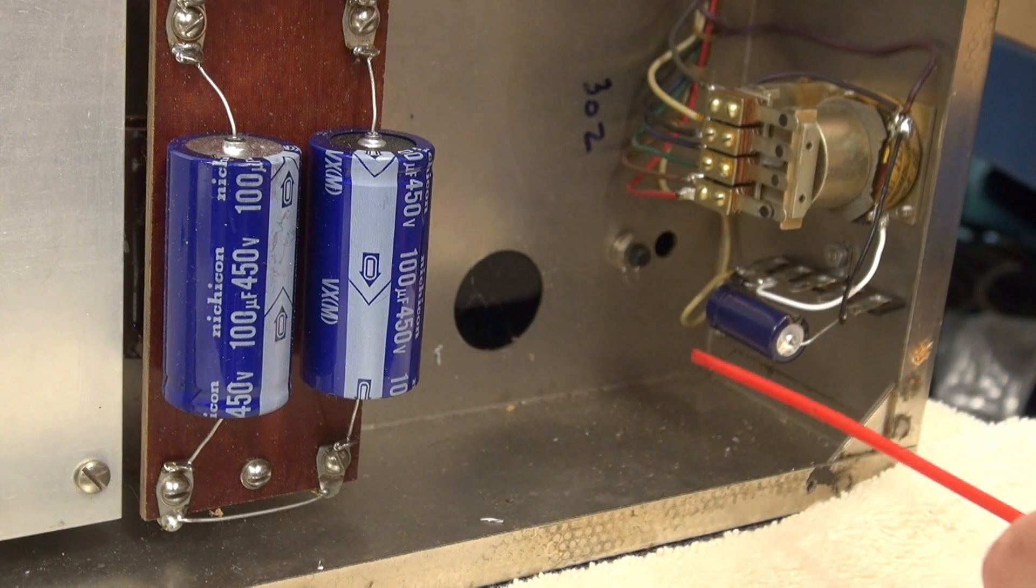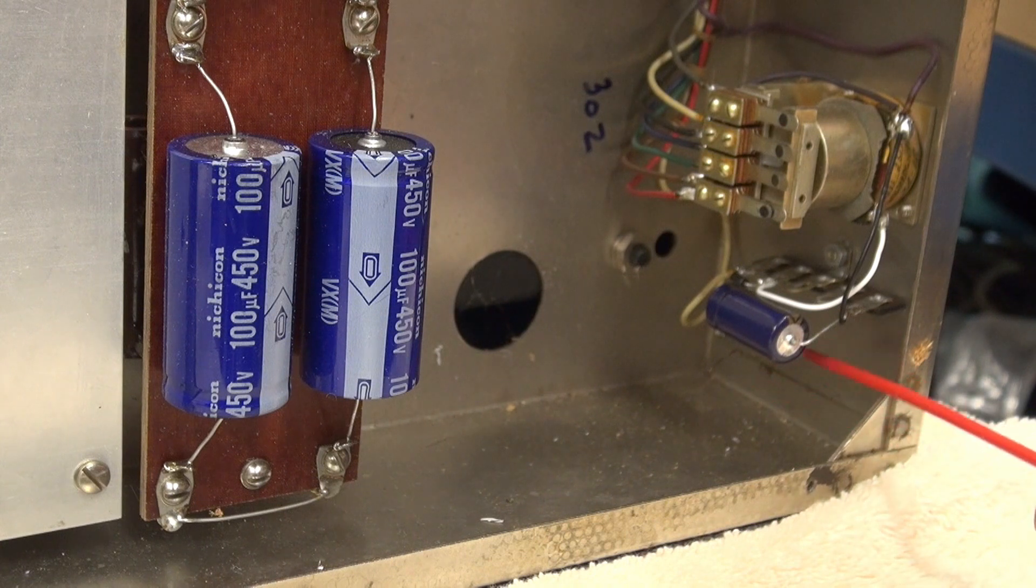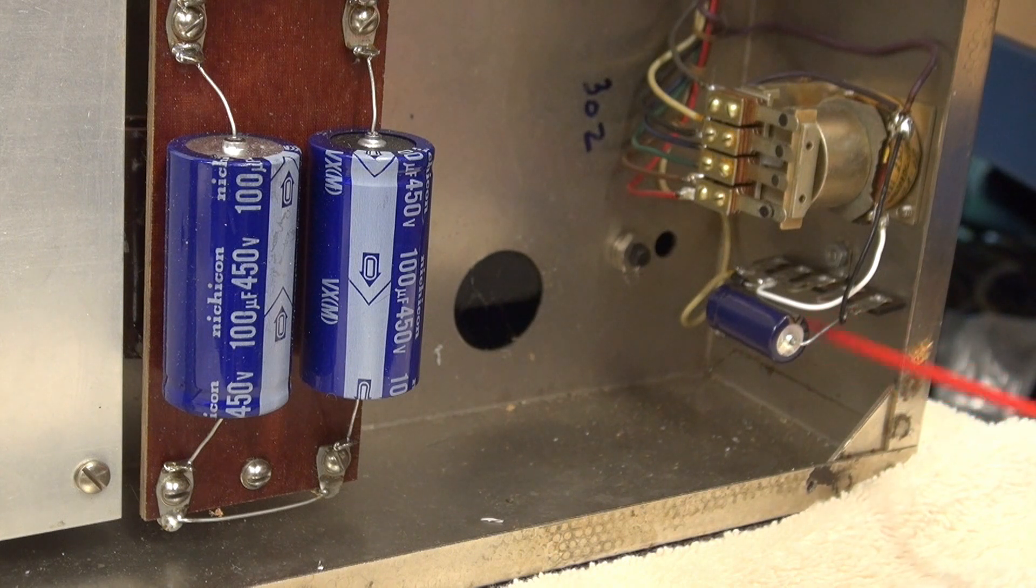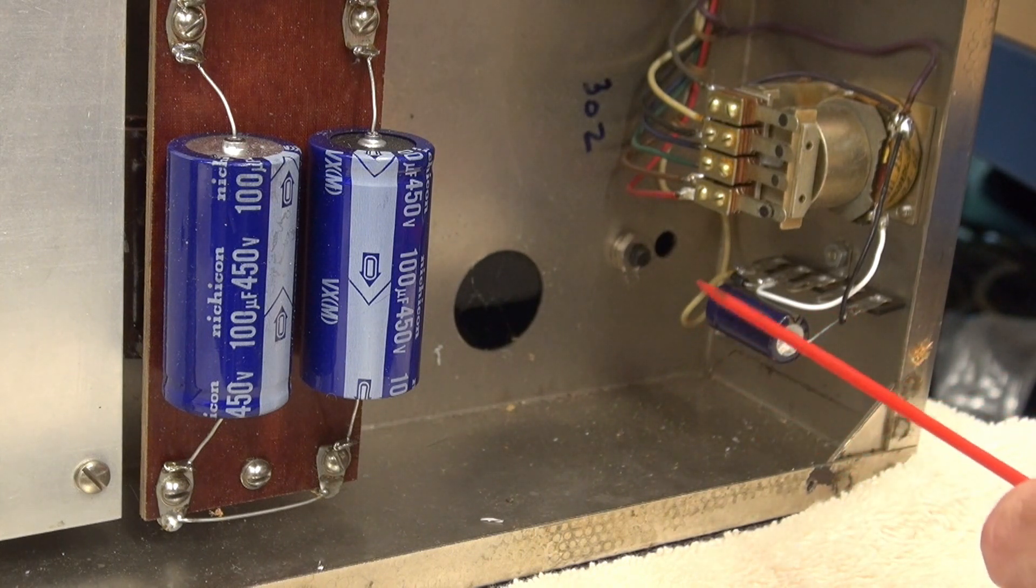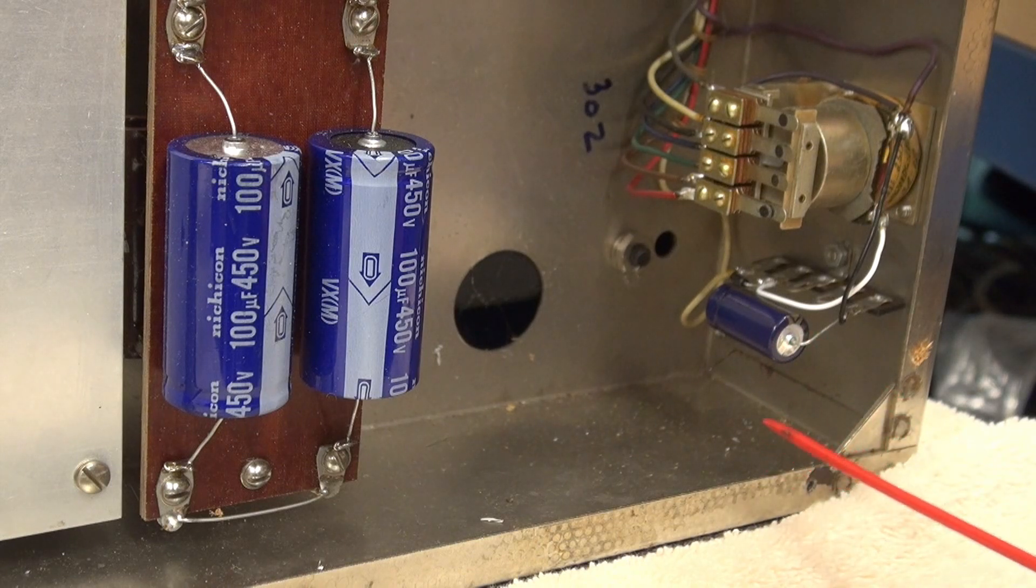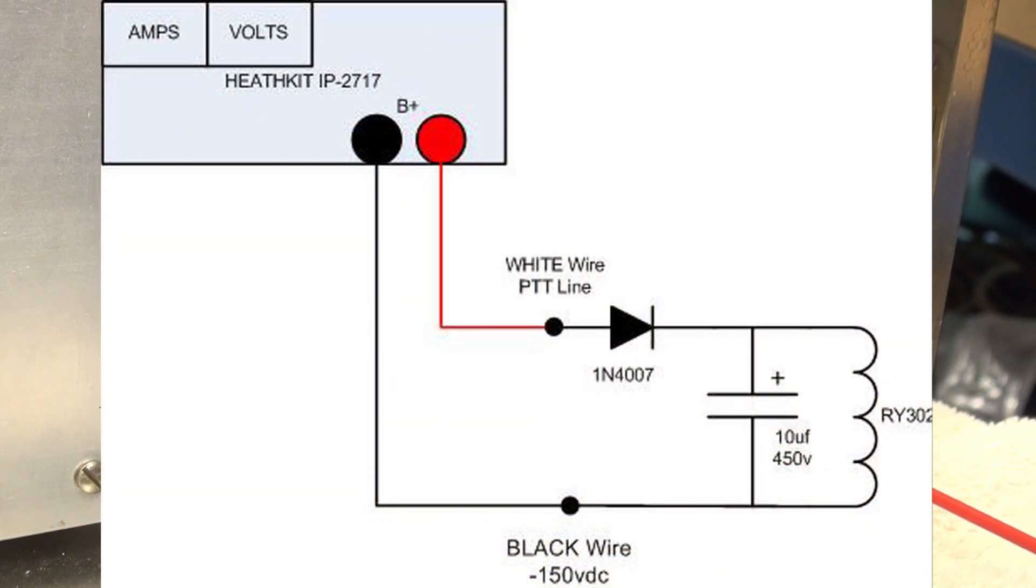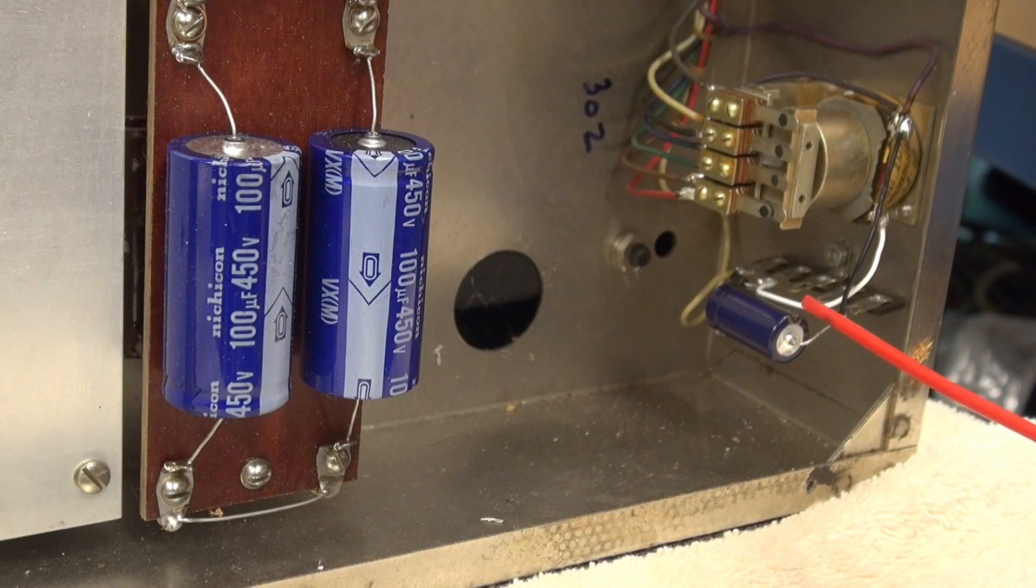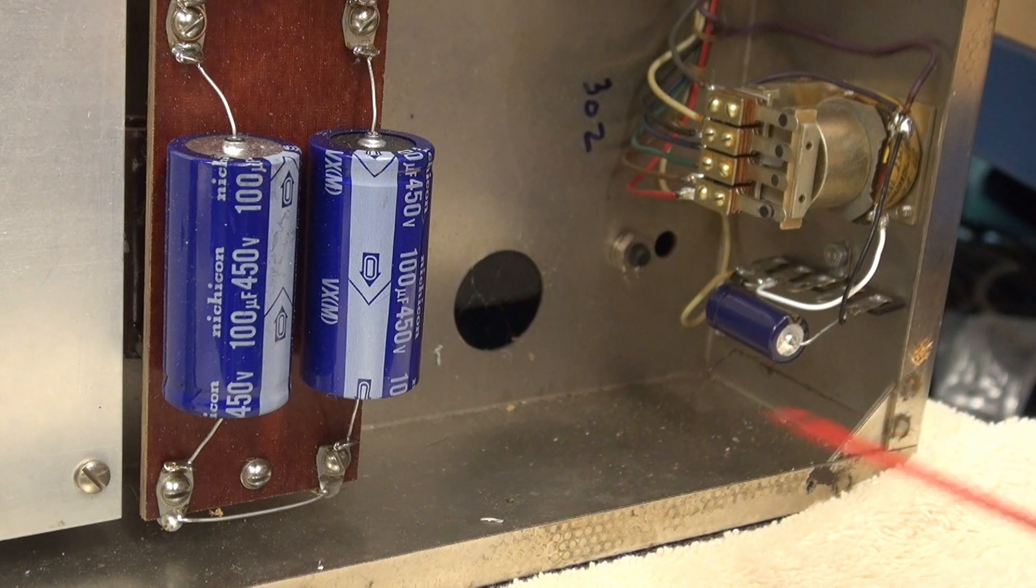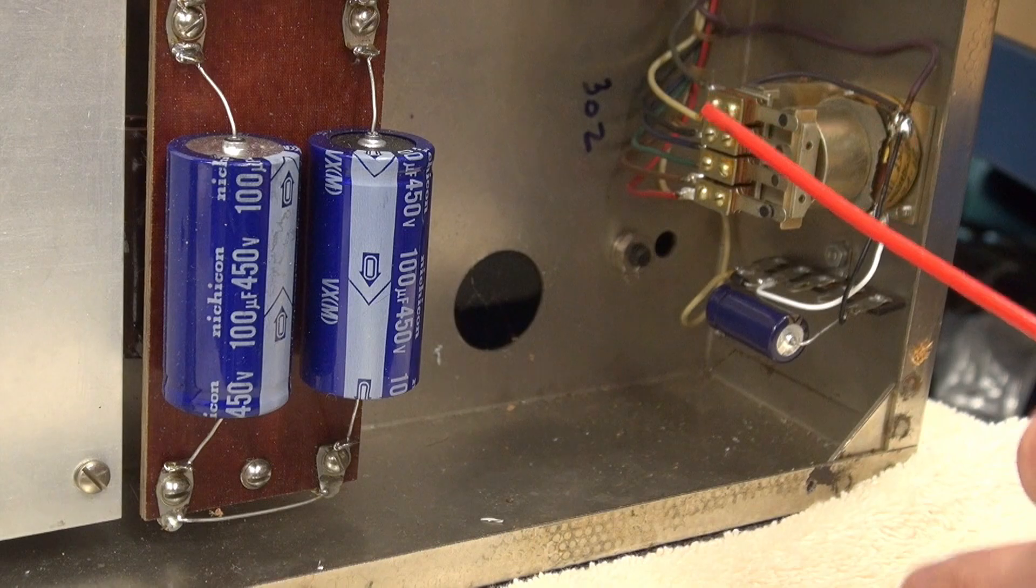Procedure is pretty easy. You mount the five-position terminal board to the chassis near RY302. The center ground tab on this terminal board is not used. You're going to install the diode and capacitor per this diagram that I'm going to show you right now. To test the circuit, we're going to use the external high voltage power supply, so you don't even need to turn on your Johnson 500 to verify that these items are operating. Let me show you how to do that.